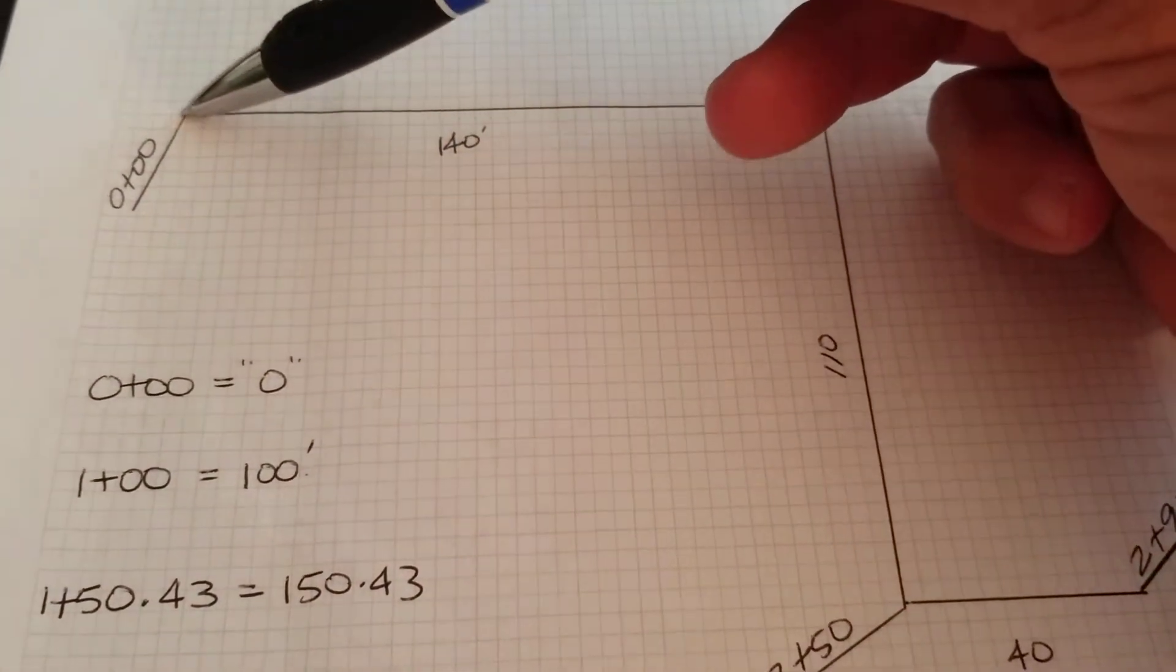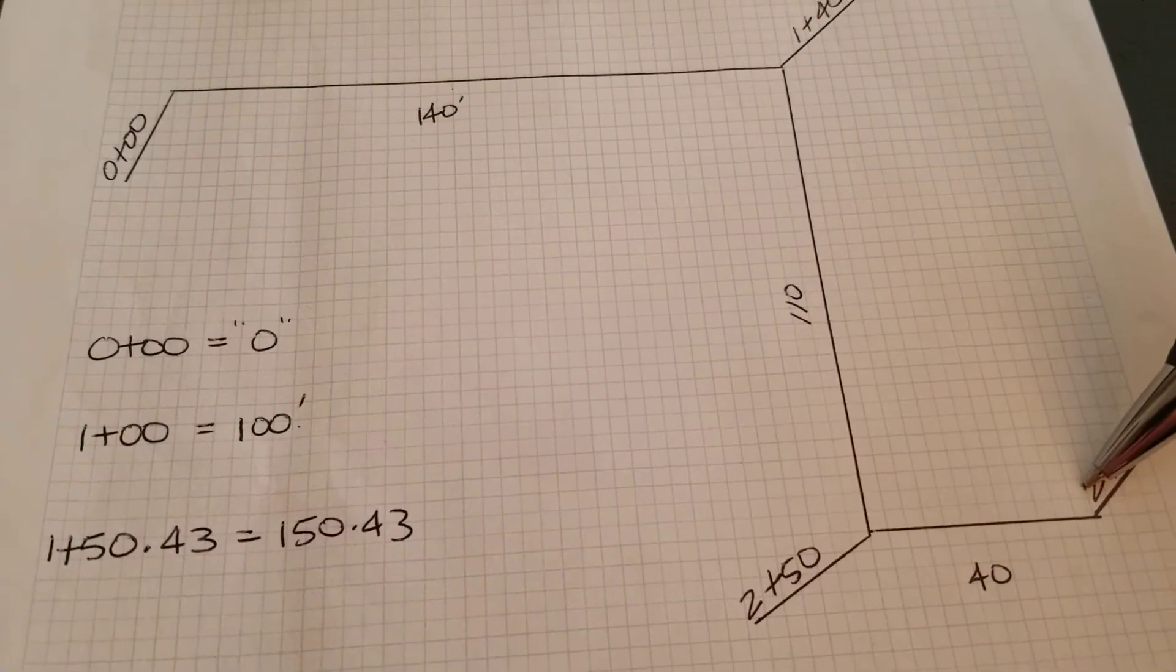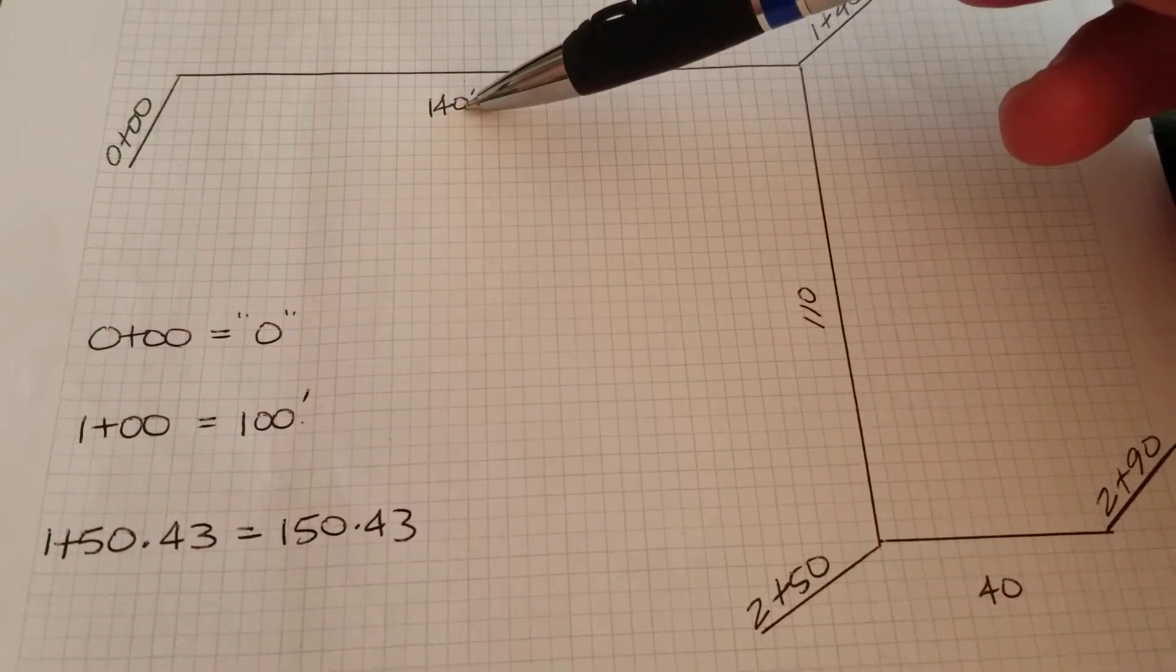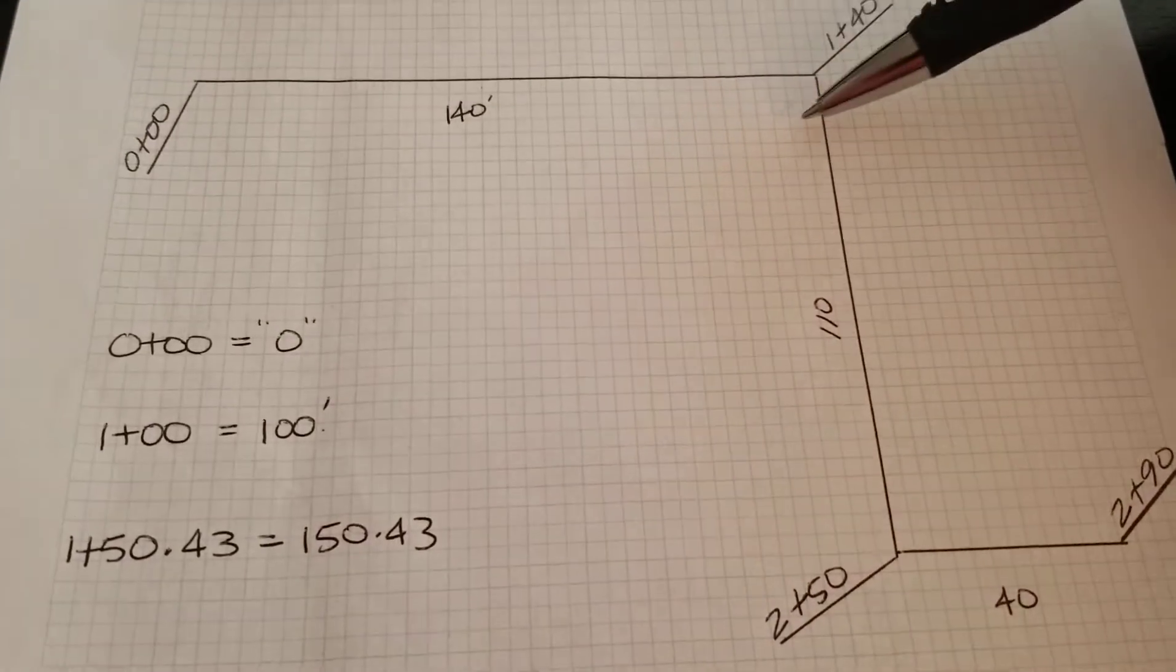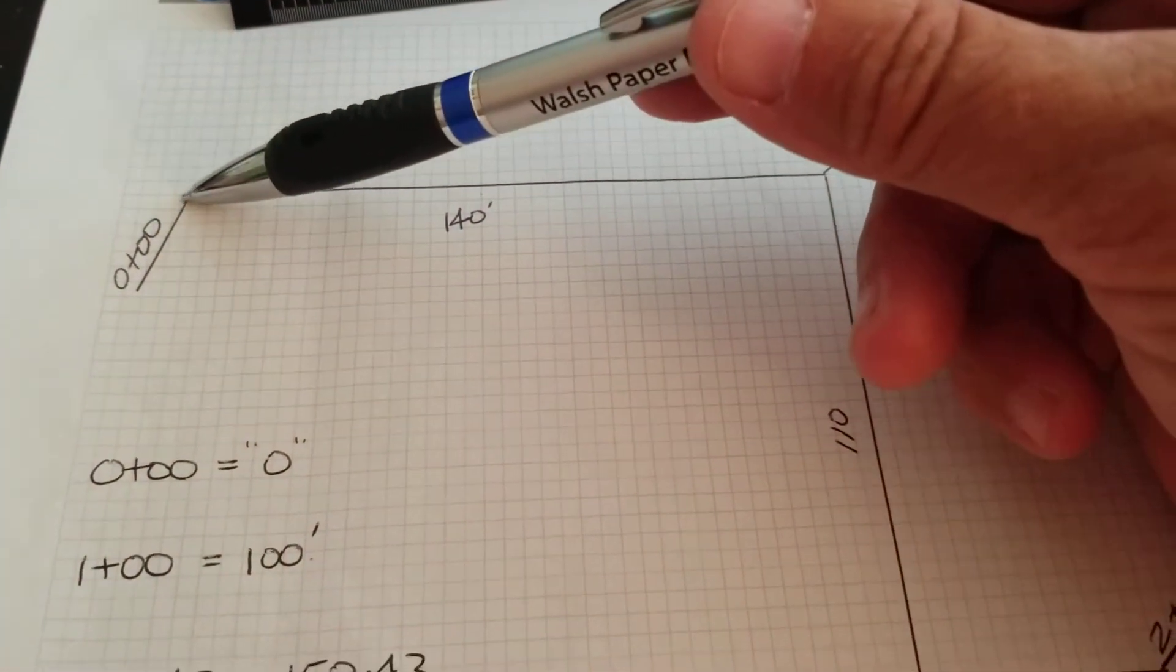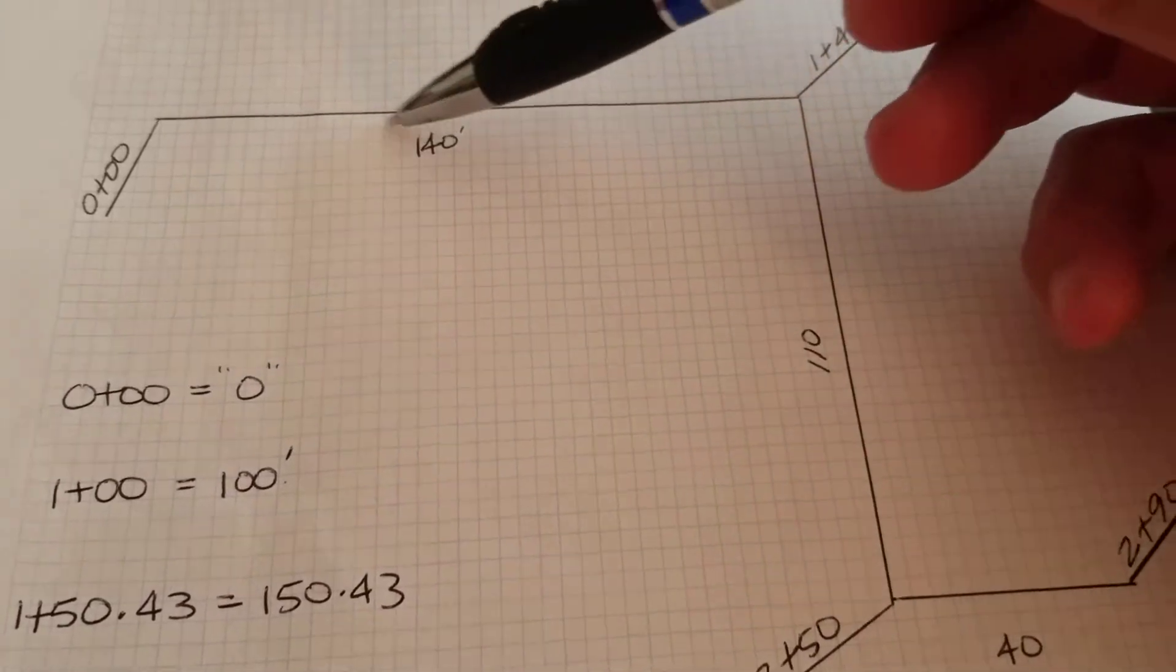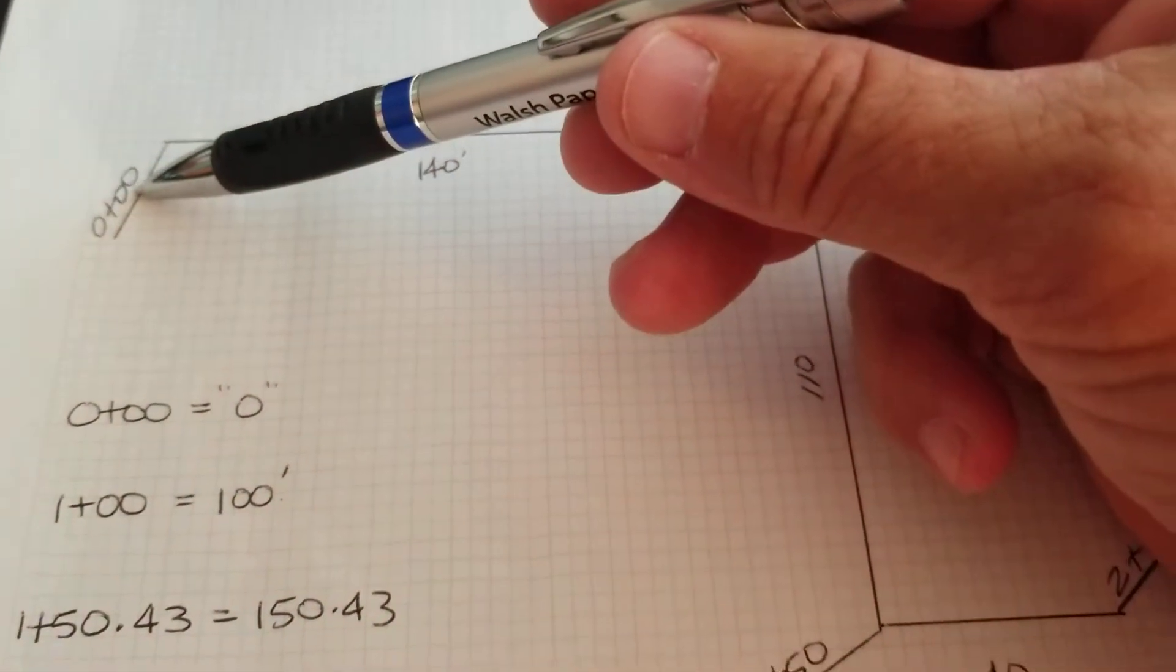And the curb started here and it had an angle point, came down, had an angle point, and it ended, say it was a parking lot or something like that. On the plan they may not say 140 feet length from start to angle point, but they may say 0+00 for the begin and then this angle point is 1+40. And that tells the linear feet. Even if this was 1+00, this would make this angle point over here 2+40.